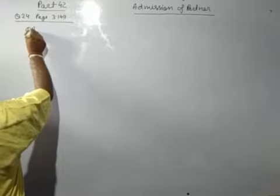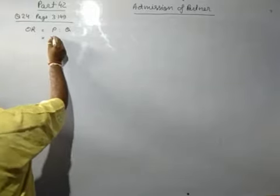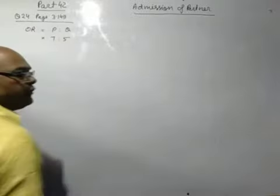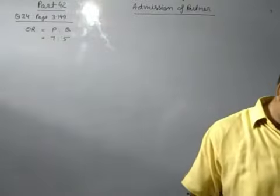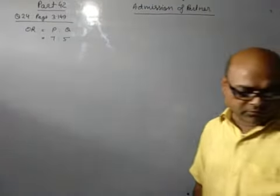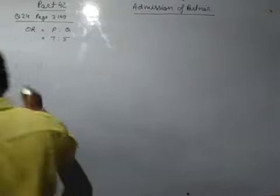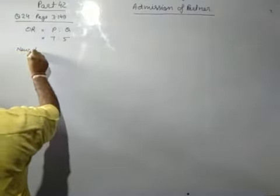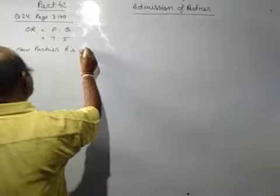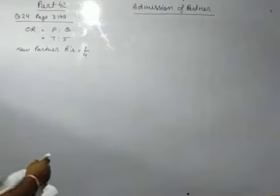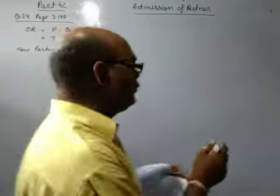They admit R into partnership for one-fourth share who paid 30,000 in cash for goodwill. So new partner is R, our ratio is given 1 by 4. P and Q decided to share future profit equally, future profit ratio.